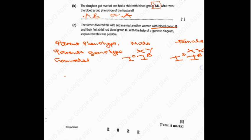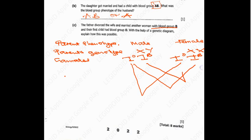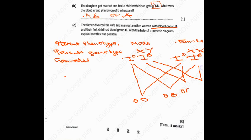And then we pair them. O will go with O, then O will go with B, then B will go with O, and then B will go with B. Don't get confused on how to match them — just start with the first one and match it with each one of the female gametes. So O and O gives OO, O and B gives OB, B and O gives OB, and B and B gives BB.